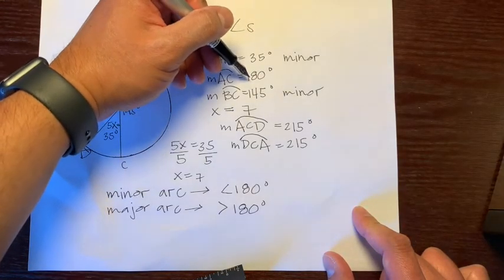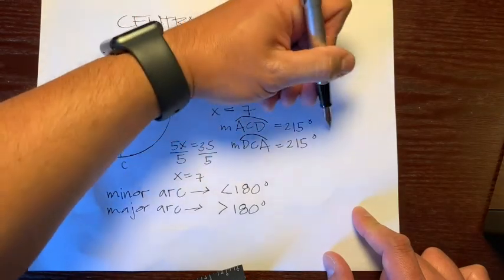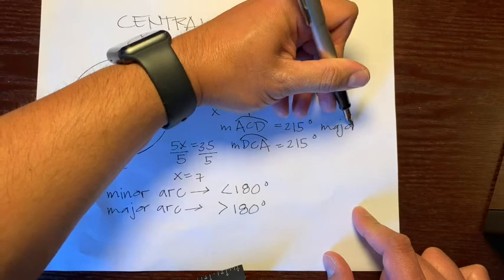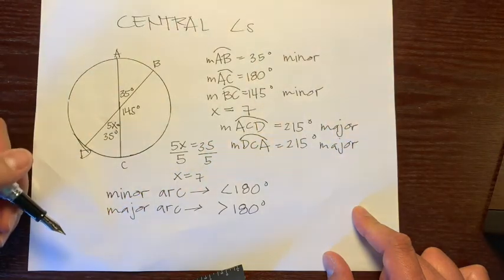That's not greater than 180. That's equal to 180. These two are greater than 180. So this is a major, and this is a major arc.